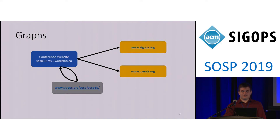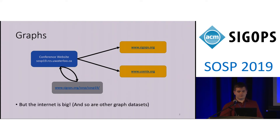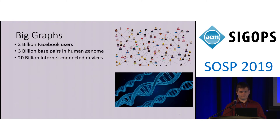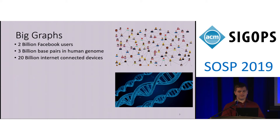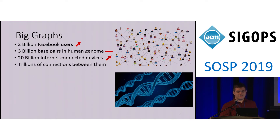As it turns out, the internet is a little bigger than that these days, and so are many of the other data sets that we work with. The Facebook graph has over 2 billion users and the human genome over 3 billion base pairs. With the internet having at least 20 billion connected devices, the trillions of connections between them make such data sets challenging to even store, let alone perform computations on.